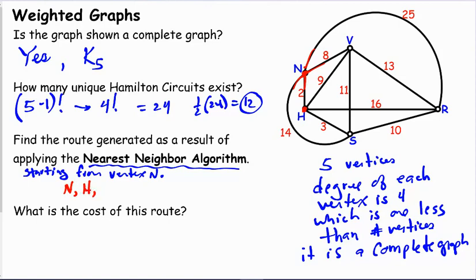From H, what is the smallest edge or the least expensive edge connected to it, not including N, because we've already been there. We want to save N for last to go home to. So we look and say from H, we have 9, 16, and 3. So we will go to S because that is 3.